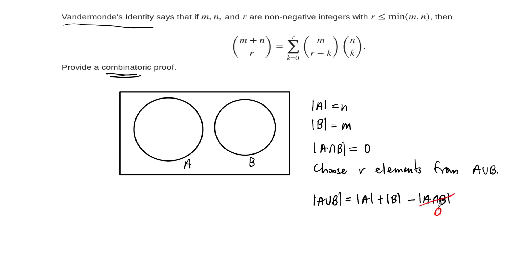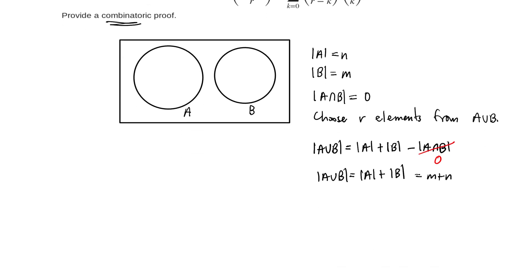But for this example, we have set this up so that that's 0. And so what we have then is that the cardinality of A union B is equal to the cardinality of A plus the cardinality of B. And that's obviously equal to m plus n. And so on one hand, the number of ways that we can choose these, let's call this our left-hand because of the way our equation was written, but on one hand, we get that this is just m plus n choose r.